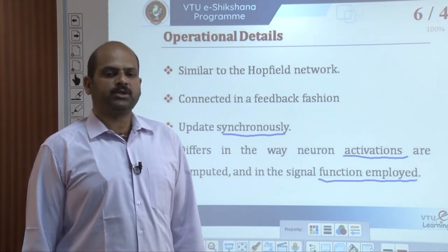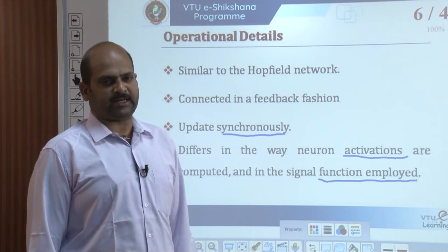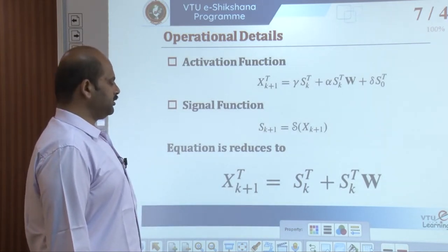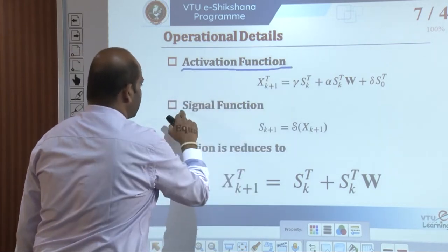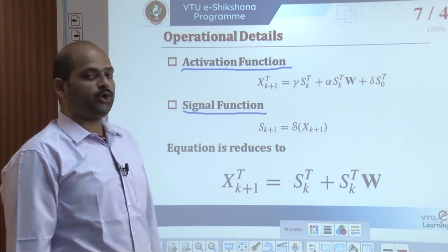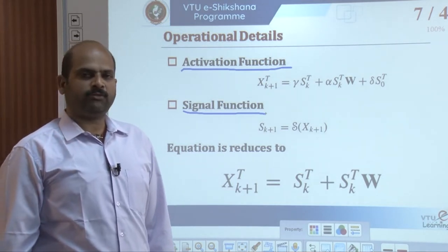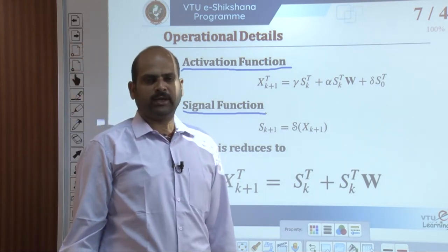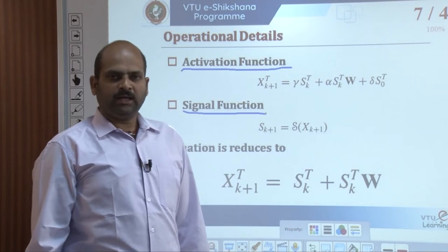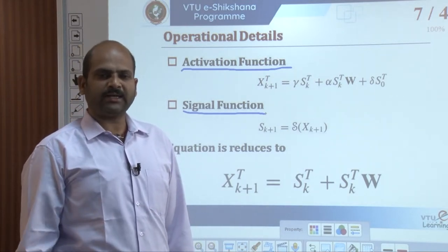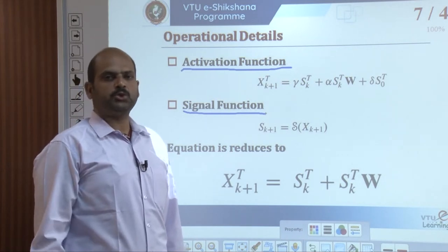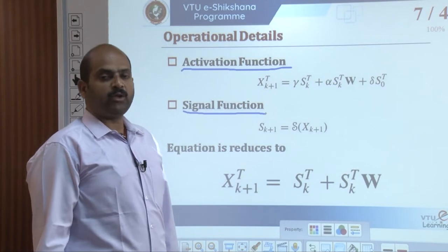We will now formalize both in discrete time, discussing the activation function and signal function. Assume the network has an activation vector X = [x1, x2, ...]^T and a corresponding signal vector S = [S1, S2, S3]^T at time instant K. The BSB network updates these signals in accordance with a pair of update equations.